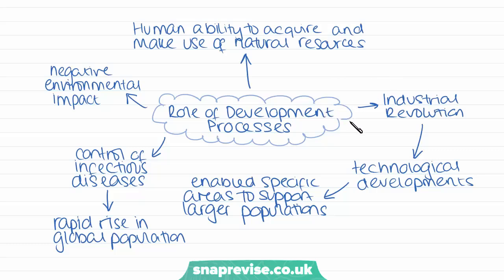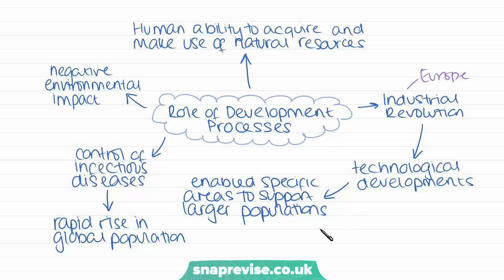Development surges have resulted from triggers to the process, most notably the Industrial Revolution which occurred in Europe in the 1800s and 1900s. This allowed technological developments to take place, which then enabled specific areas to support larger populations. Development has also been aided by the reduction of mortality rates and the improvement of life expectancies, very much linked to the control of infectious diseases. Through development we have been able to control diseases with greater efficiency.